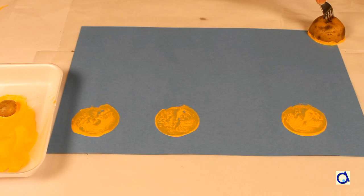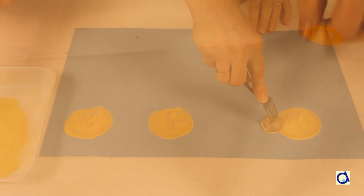Still with the same potato, paint a sun or just a piece of sun in a corner of the sheet.